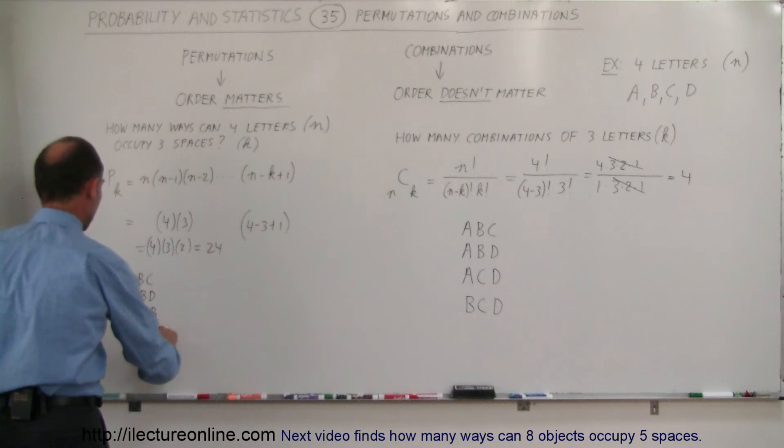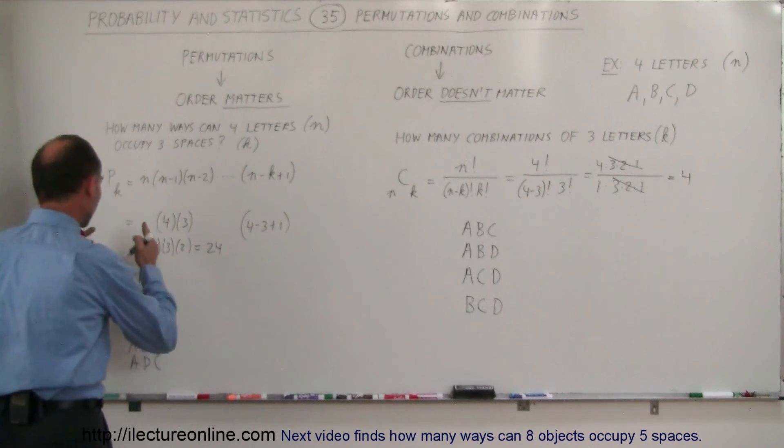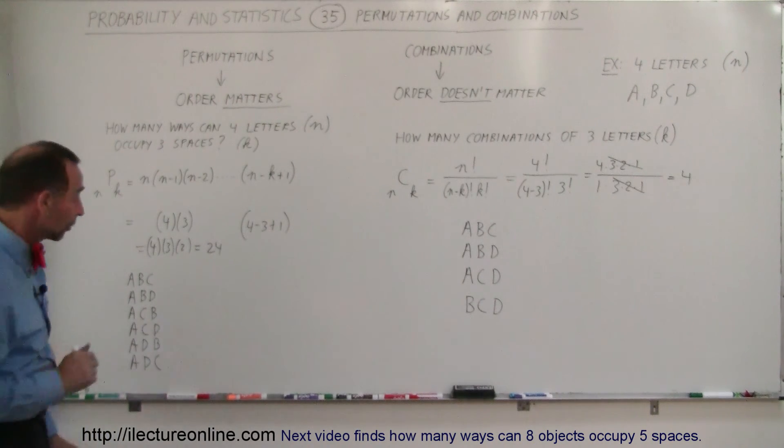A, C and D, A, D and B, and A, D and C. So, we have all 6 permutations starting with the letter A. Now, we should have 6 more permutations starting with the letter B.